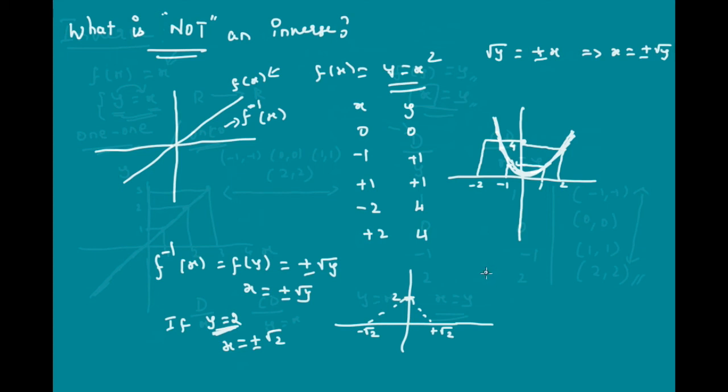Thus, inverse does not exist for such a function because simple reason it is not a function and another reason what can be attributed is it is not retracing the same curve. So, thus for a function to have inverse, the 2 equations that is the given function and its inverse should retrace the same curve.